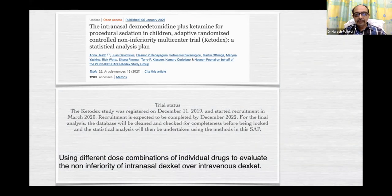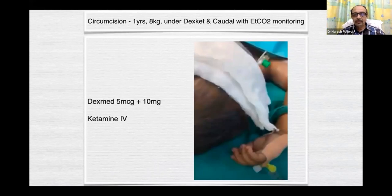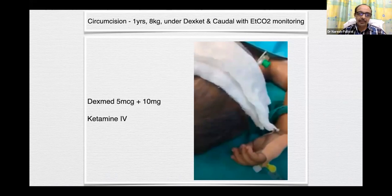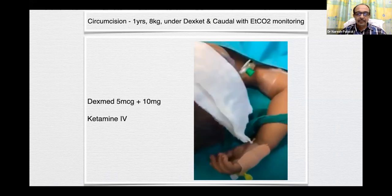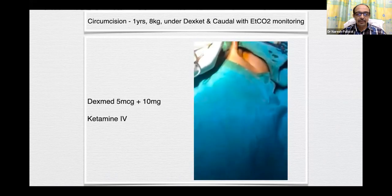Now I will show some short pictures and videos. Most of my previous videos got deleted, so these are few that are left. This is a circumcision in a one-year-old, 8 kg, under dexket and caudal block with EtCO2 monitoring. I don't monitor EtCO2 regularly, but this was used just for presentation purposes using an 18-gauge IV cannula to monitor the EtCO2 in this patient.